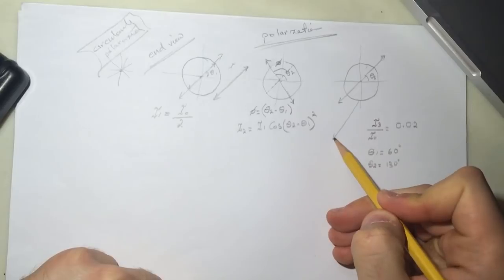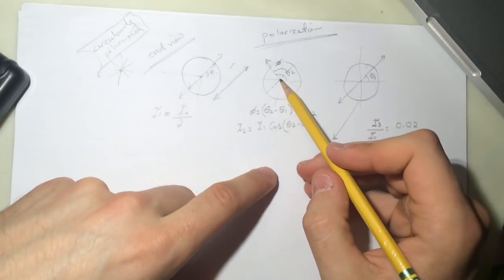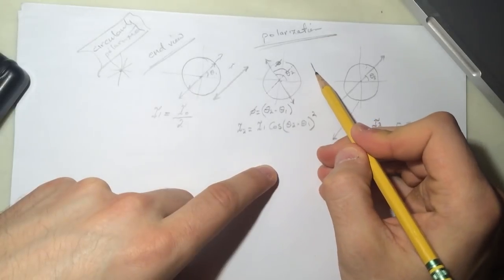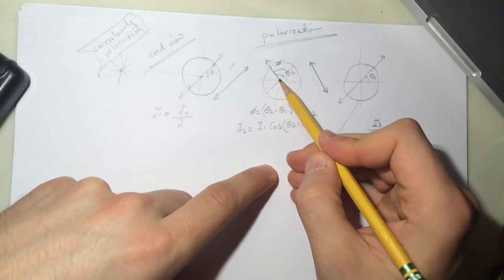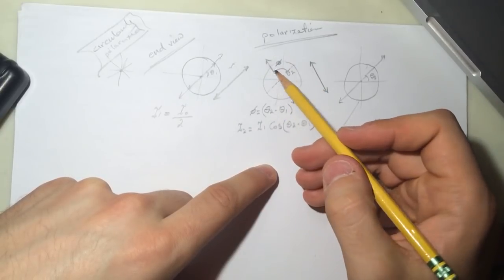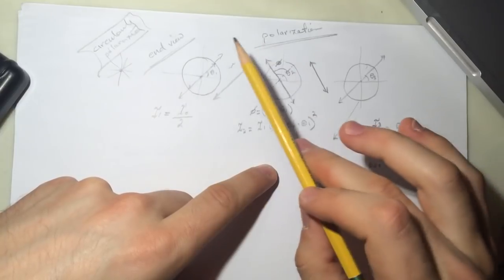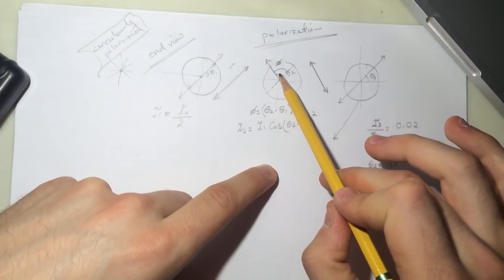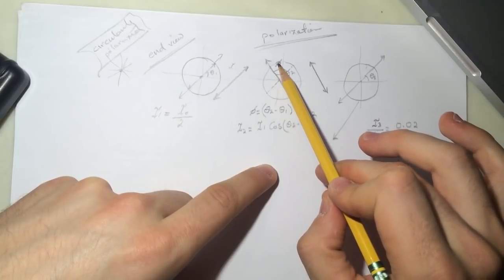All right, now for this guy. So now the only light that's going to pass after this guy is going to look like this, because the transmitters or transmissions or whatever is only in this way. It can only pass the light that is with an angle theta 2.